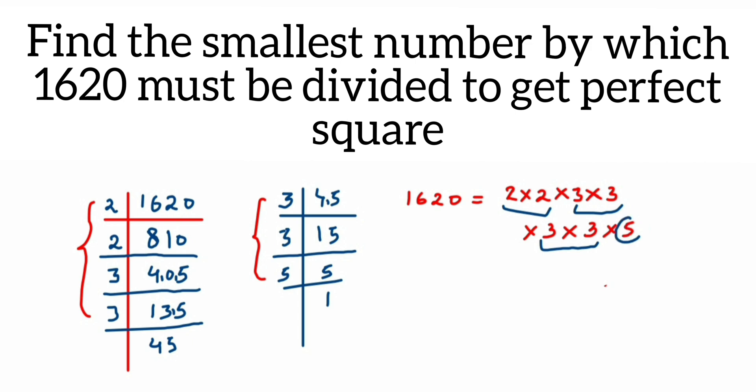This means 1620 is not a perfect square. To make it a perfect square, I need to remove this 5. The smallest number to be divided here will be 5 because it doesn't have any pair.